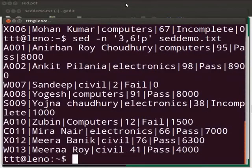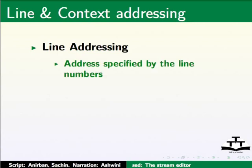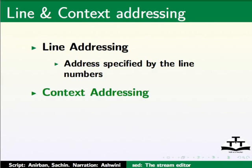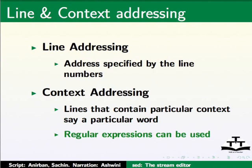Let us switch back to our slides: line addressing and context addressing. So far we specified the lines in the file on which the action needs to be taken. This is known as line addressing — address specified by the line number. Another way of addressing is context addressing, where lines contain a particular context, such as a particular word. If we want to take action on lines that contain a particular word, we use context addressing. Regular expressions can be used.